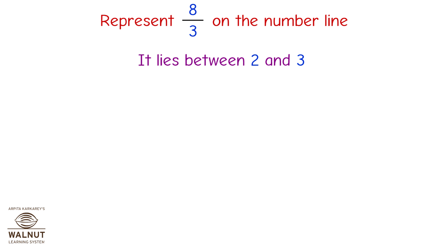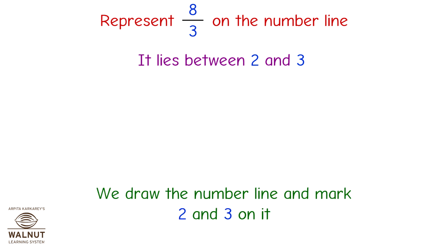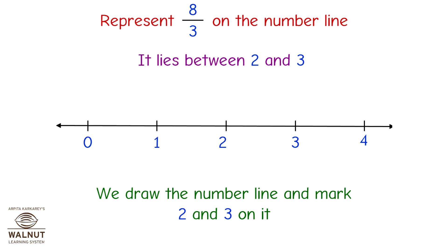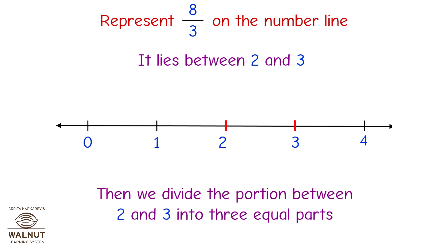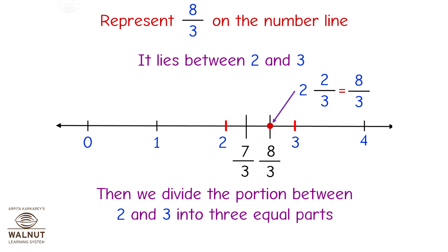Represent 8 upon 3 on the number line. It lies between 2 and 3. We draw the number line and mark 2 and 3 on it. Then we divide the portion between 2 and 3 into 3 equal parts: 7 upon 3, 8 upon 3 — that is 2 and 2 upon 3, which is equal to 8 upon 3.